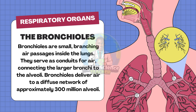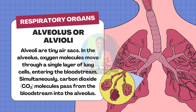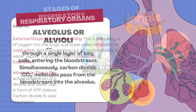The bronchiolus are small branching air pathways inside the lungs. They serve as conduits for air, connecting the large bronchi to the alveoli. Bronchiolus delivers air to a diffuse network of approximately 300 million alveoli. The alveoli are tiny air sacs. In the alveolus, oxygen molecules move through a single layer of lung cells entering the bloodstream. Simultaneously, carbon dioxide passes from the bloodstream into the alveolus.